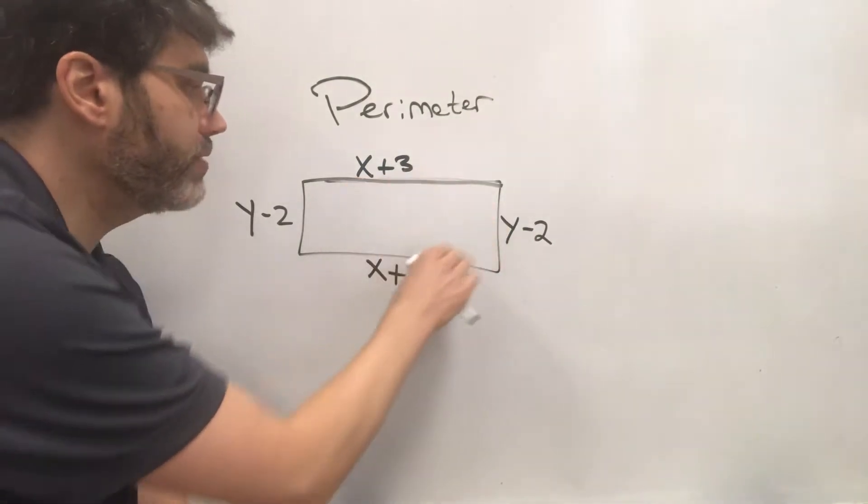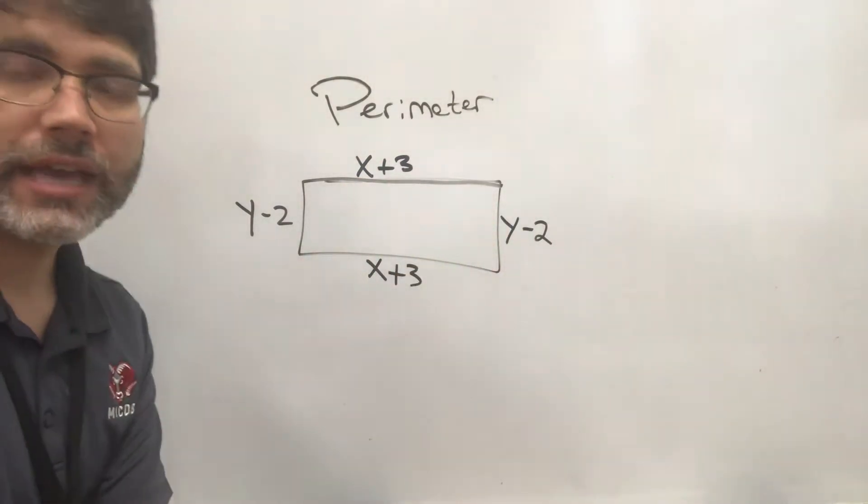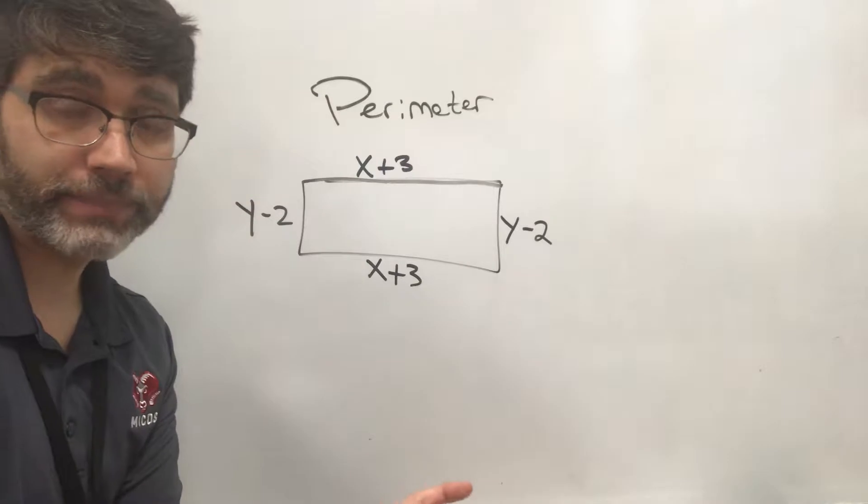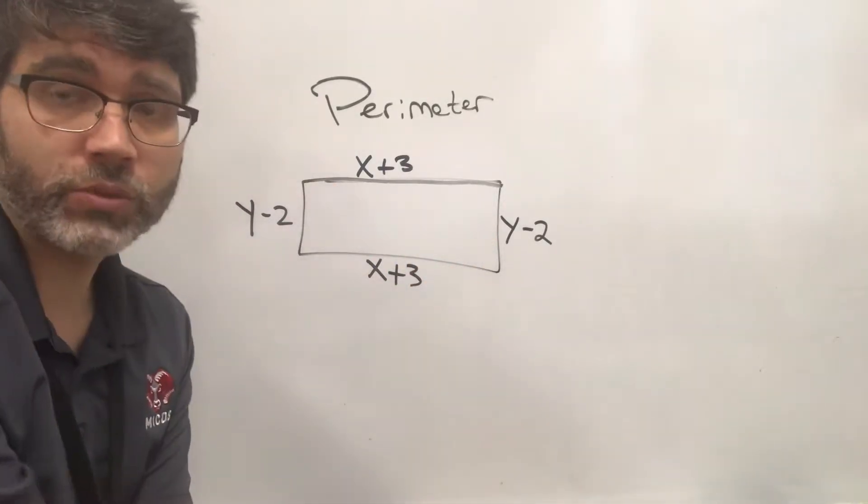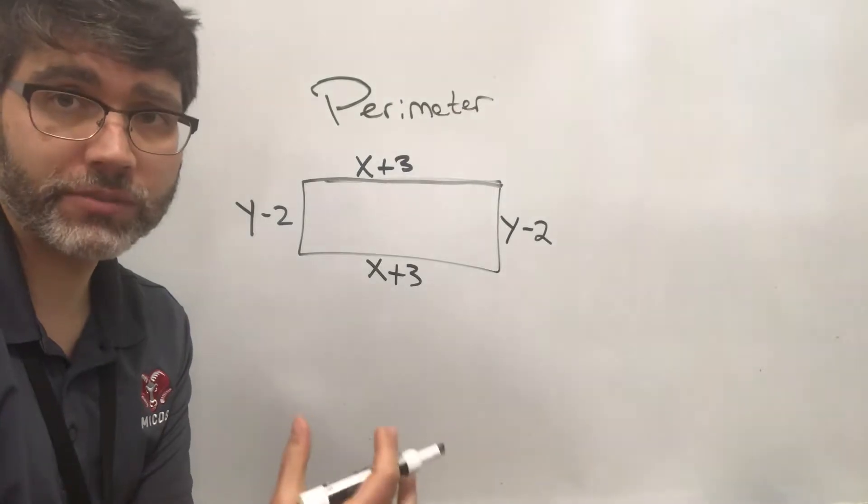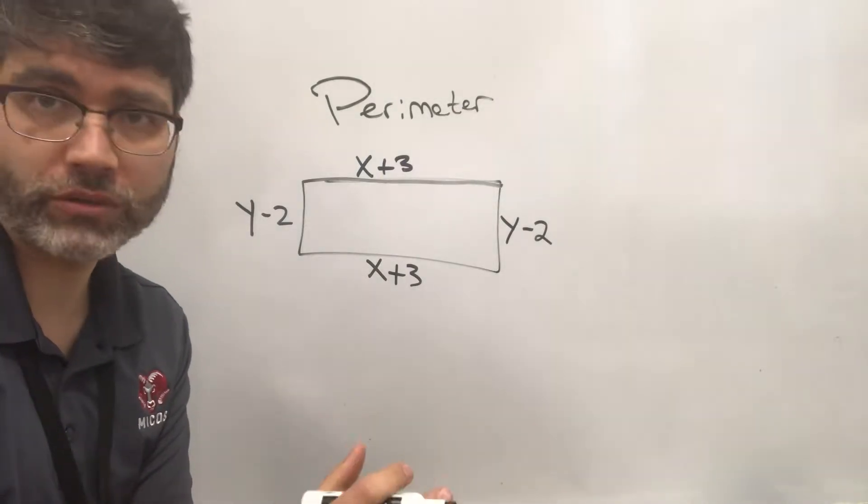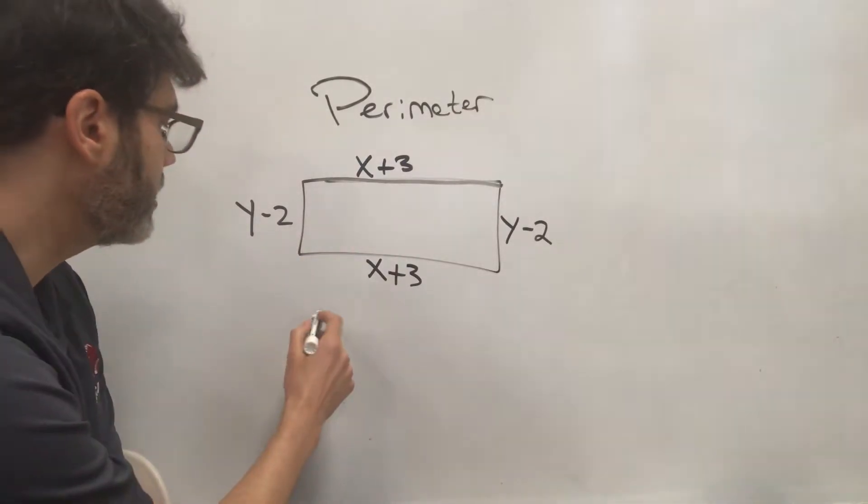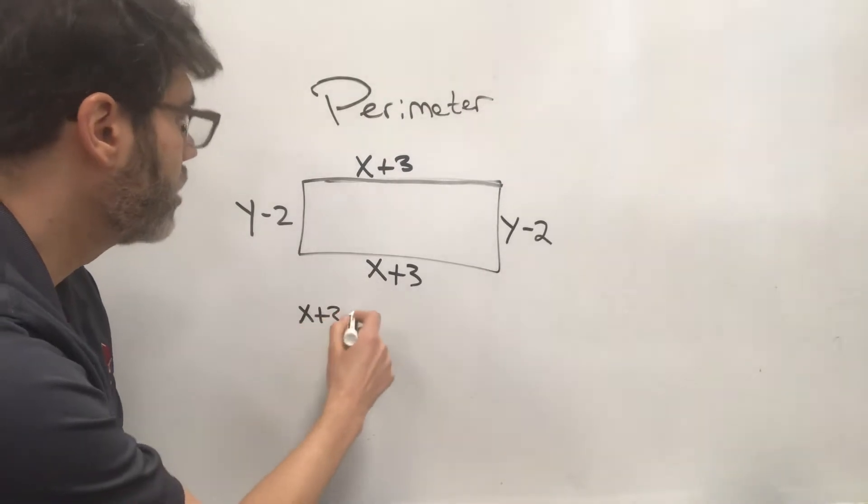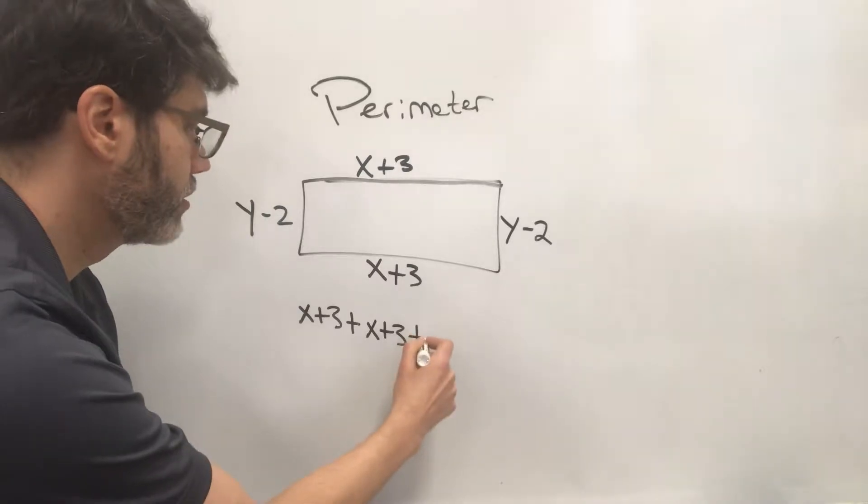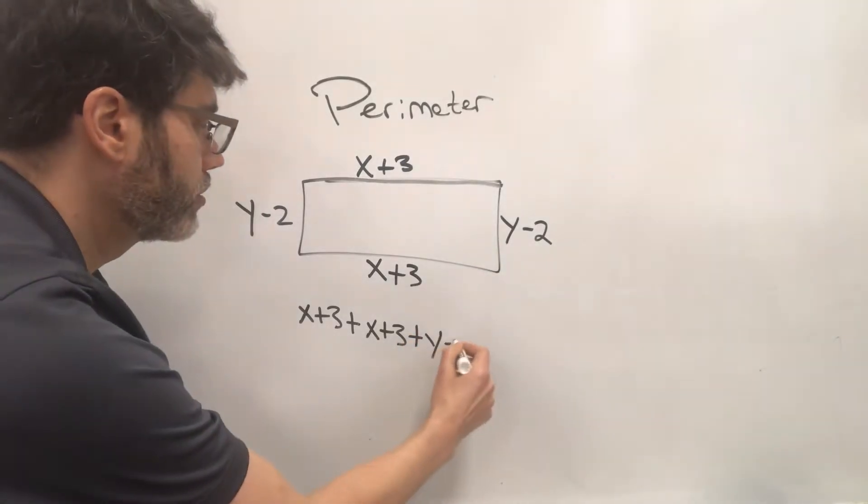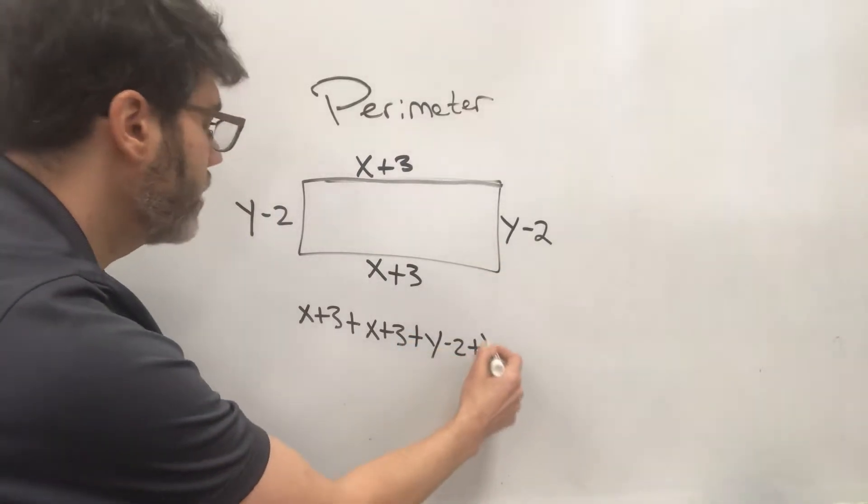So perimeter is adding up all of the edges of a shape, and that will be the perimeter. Now, since we don't know what x is and we don't know what y is, we're just going to leave our answer in terms of x's and y's, and that's totally fine. So the perimeter is going to be x plus 3 plus x plus 3 plus y minus 2 plus y minus 2.